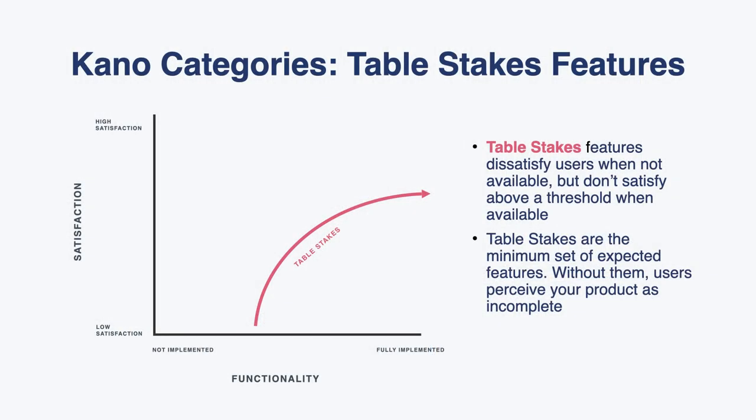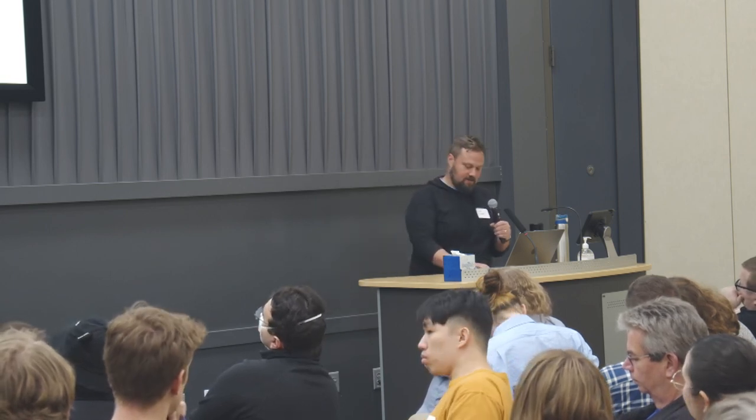The next category is table stakes features. Table stakes are kind of the inverse of delight — the more a table stakes feature is implemented, it doesn't necessarily yield incremental satisfaction; you get this plateauing effect. But if those features are absent, they will definitely dissatisfy. The example I always like to give is a password reset: nobody would write a five-star review because they had an amazing password reset experience.